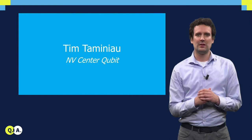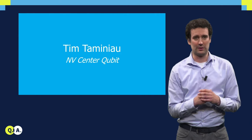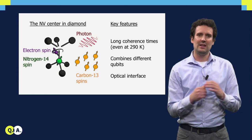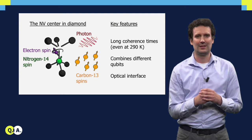Previously we have seen how we can control the electron spin of the NV center in diamond as a qubit. In this lecture we will learn how we can use the NV center to also control multiple nuclear spin qubits, and how we can link NV centers together using photons to create quantum networks.